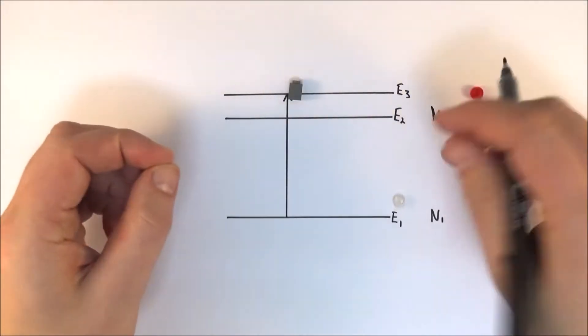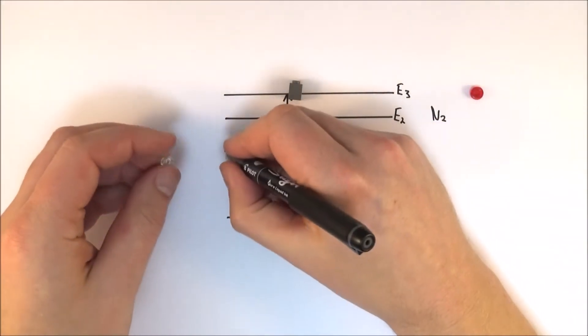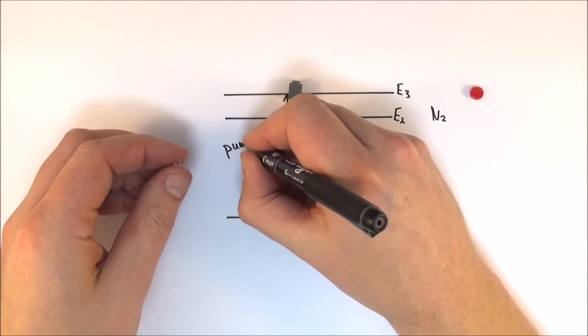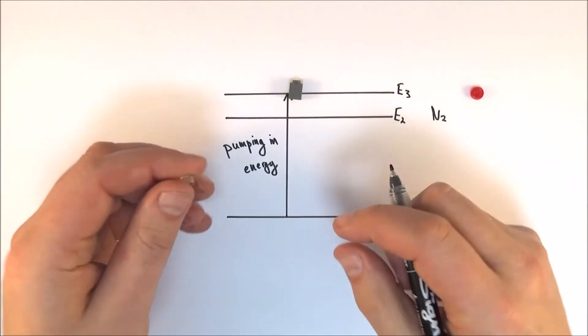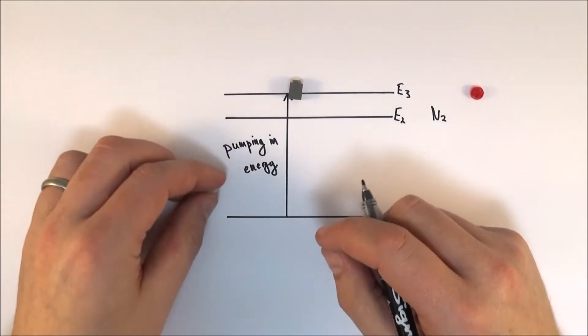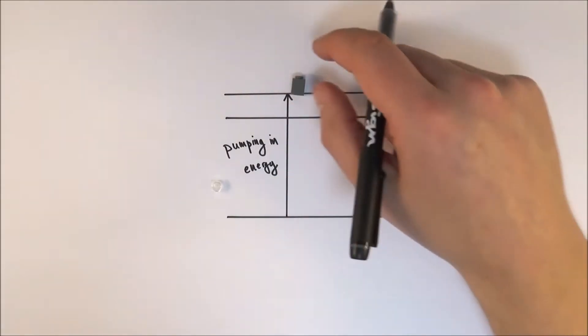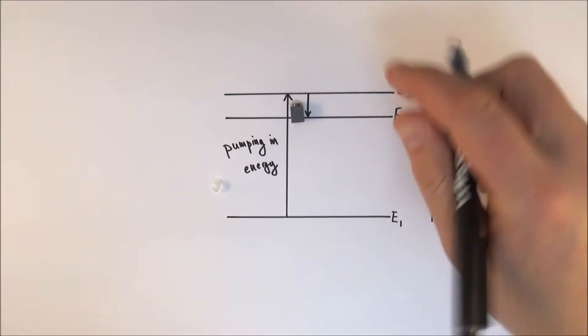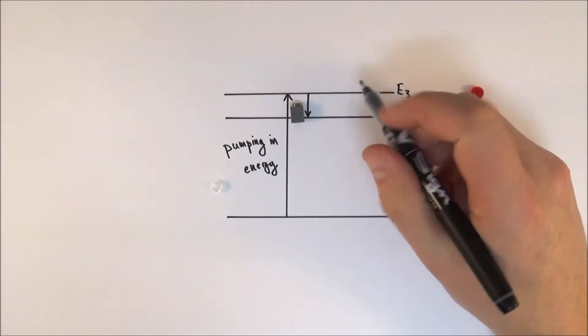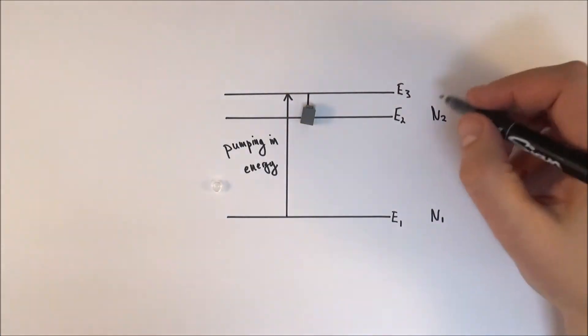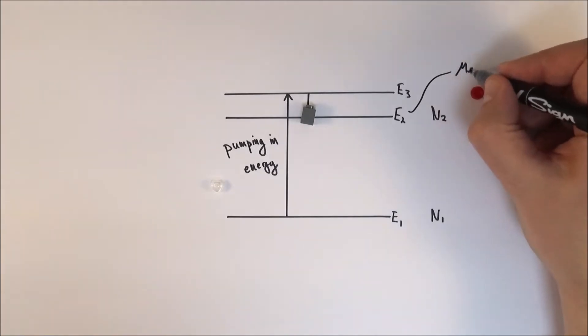Effectively, what we're doing is pumping in energy, and this is why we call it pumping the system. This might be some kind of external white light source, for example. Now the thing is, it gets to this energy level 3, and it instantaneously drops back down to E2, because this is a really unstable situation. E2 is what we call metastable.